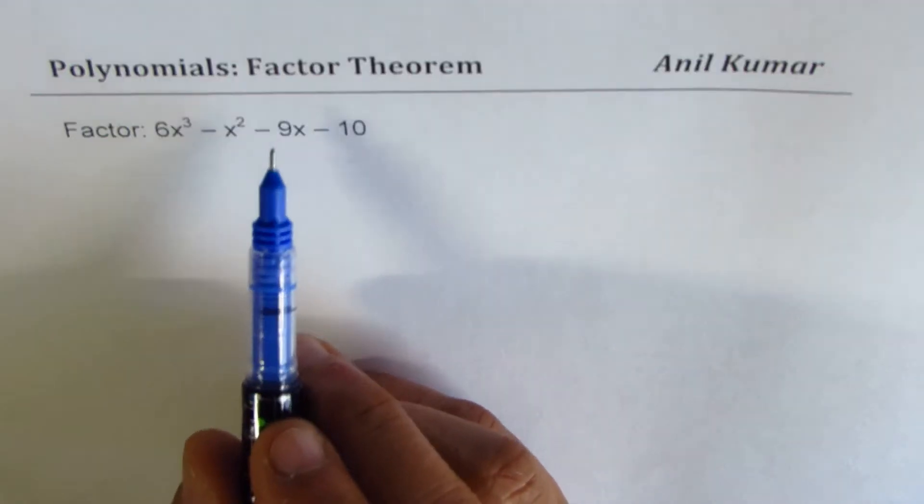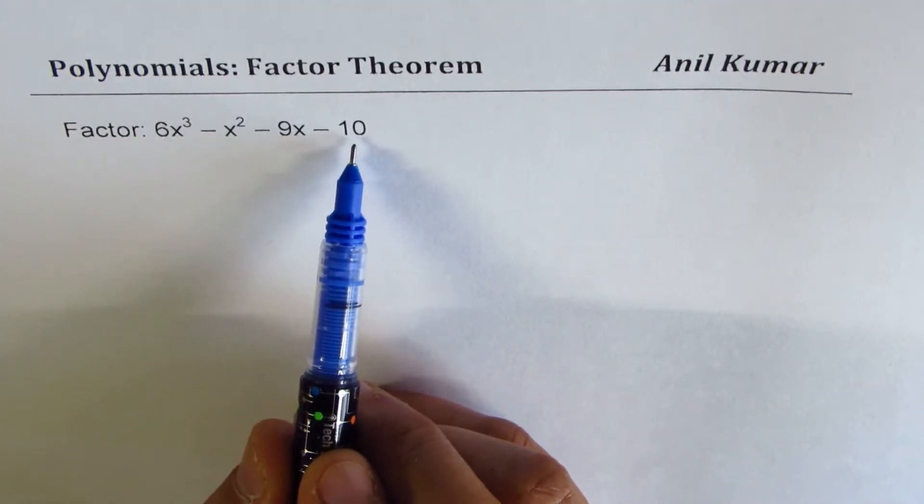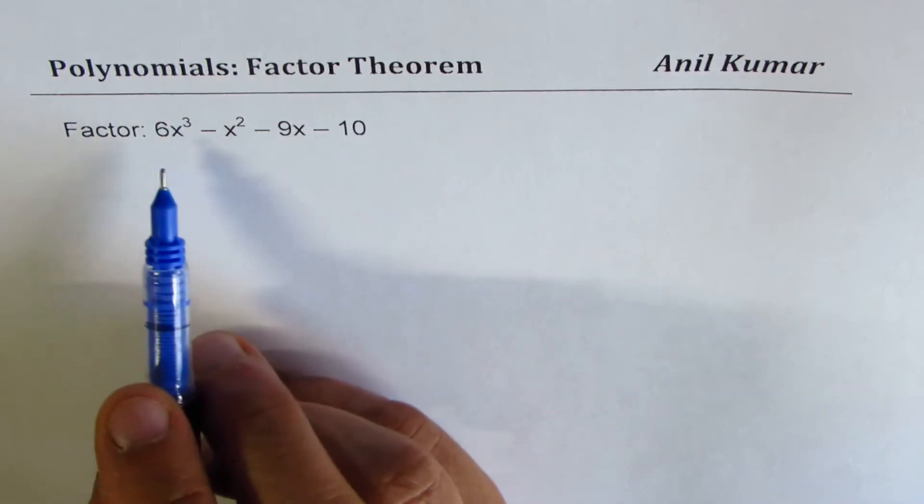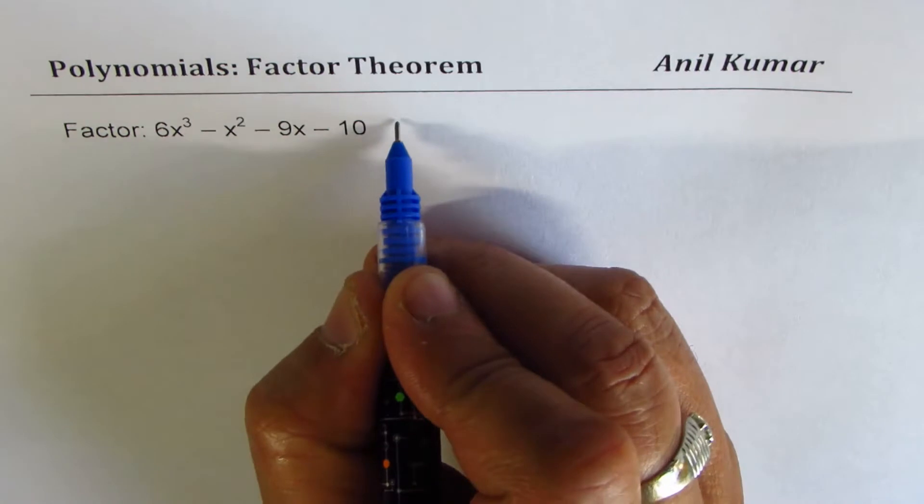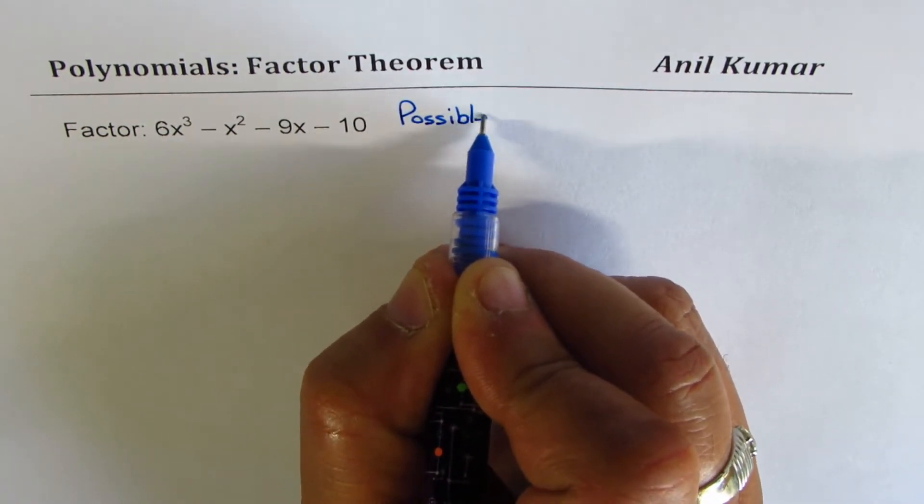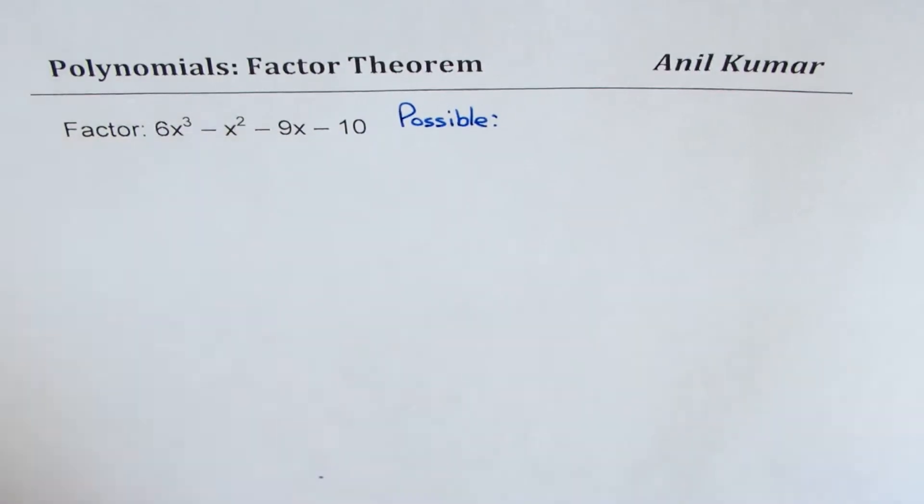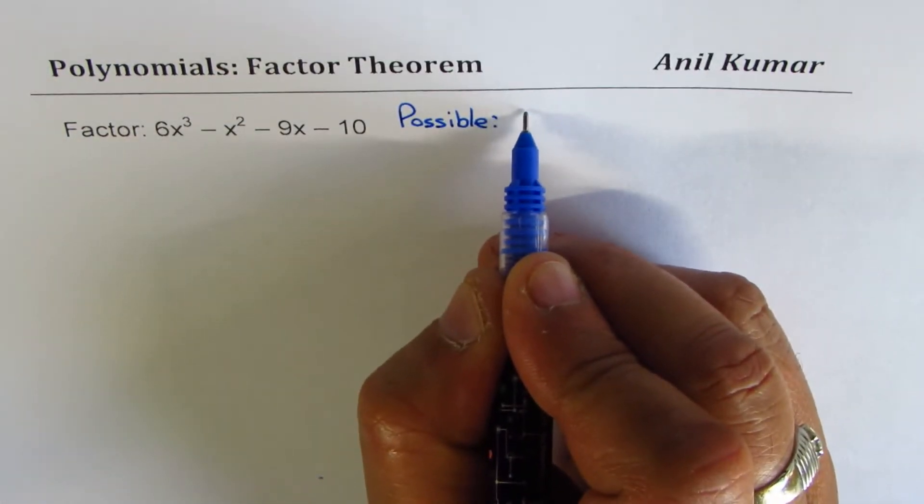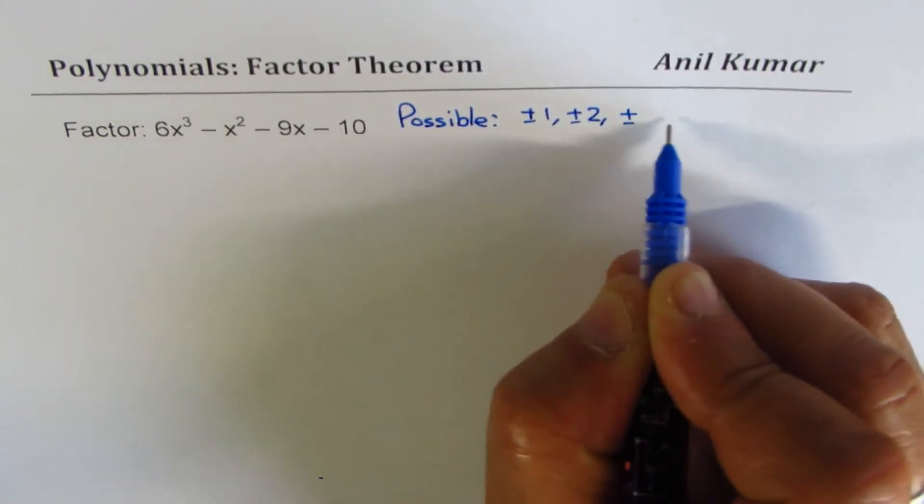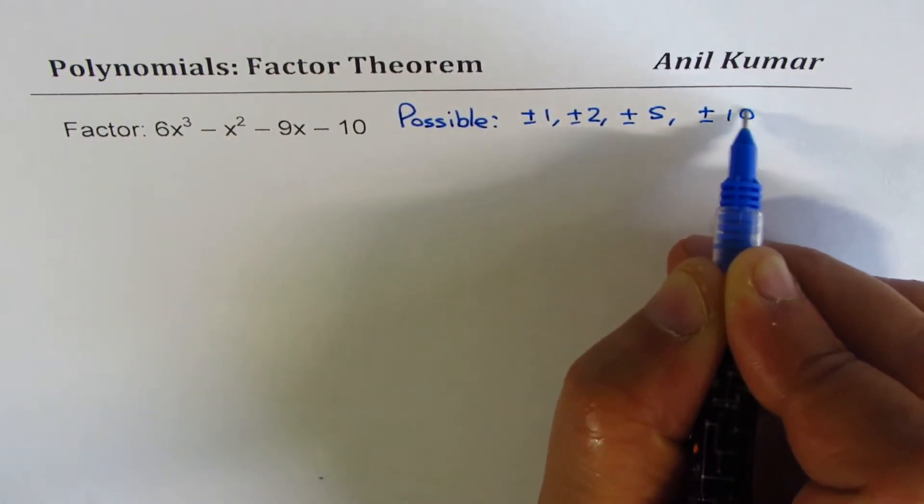Now, possible factors could be factors of 10 divided by factors of 6. So let me make a list of possible numbers to try. The possible factors are factors of 10, which are ±1, ±2, ±5, and ±10.